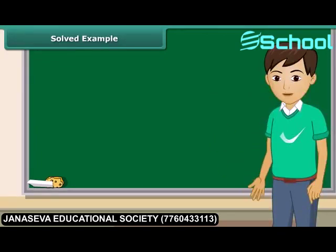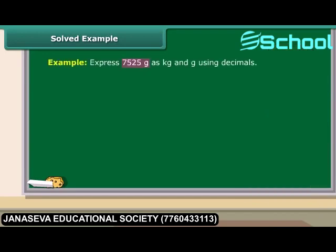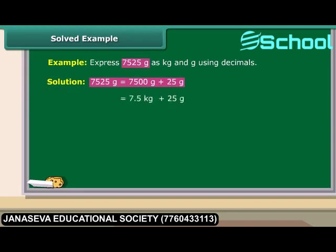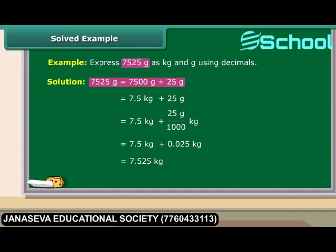Let us convert a weight expressed in grams into kilograms using decimals. Express 7525 grams as kilograms and grams using decimals. 7525 grams equals 7500 grams plus 25 grams, which is the same as 7.5 kilograms plus 25 grams. This can be expressed as 7.5 kg plus 25/1000 kg. Therefore 7525 grams are equal to 7.525 kg.